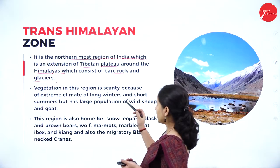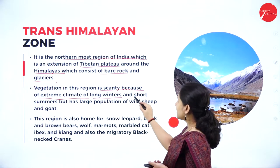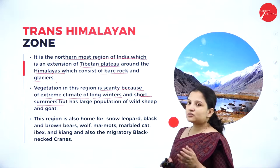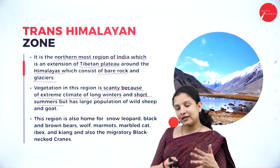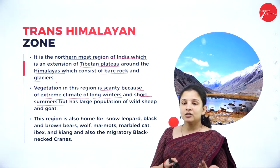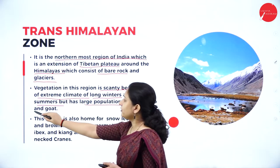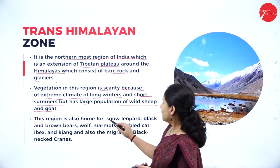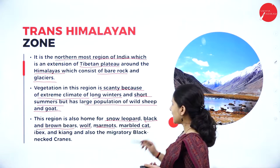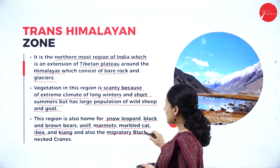Vegetation in this region is scanty because of the extreme climate — they have very long winters and very short summers. In winters, not much sunlight is available, which is very important for plants to synthesize food, and summers are too short for plant growth. But in spite of that, there is a large population of wild sheep and goat. This region is also home to the snow leopard, black and brown bears, wolf, marmots, marbled cat, ibex, kiang, and the migratory black-necked cranes.